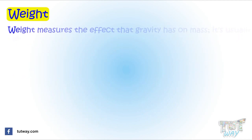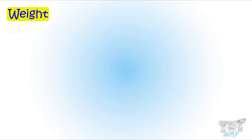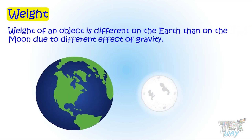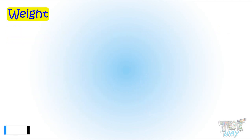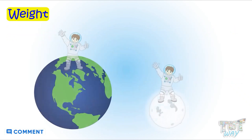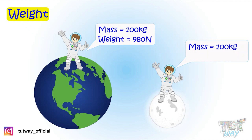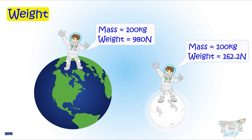Weight measures the effect that gravity has on mass and is usually measured in Newtons. The weight of an object is different on Earth than on the Moon due to the different effect of gravity. Weight is also different at the equator and poles due to gravity varying across parts of Earth. For example, a person with a mass of 100 kg would weigh 980 Newtons on Earth but only 162.2 Newtons on the Moon.